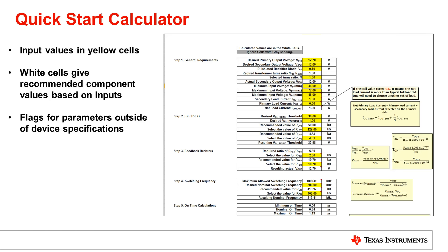The quick start calculator enables the designer to get a jump start on their design. All they have to do is input their desired design values in the yellow cells, such as the input voltage, output voltage, and output current, and the white cells will give the recommended component values based on the inputted parameters. This will also flag parameters that are outside the specification of the device. Once everything is done, the designer will have a schematic that is ready to go.